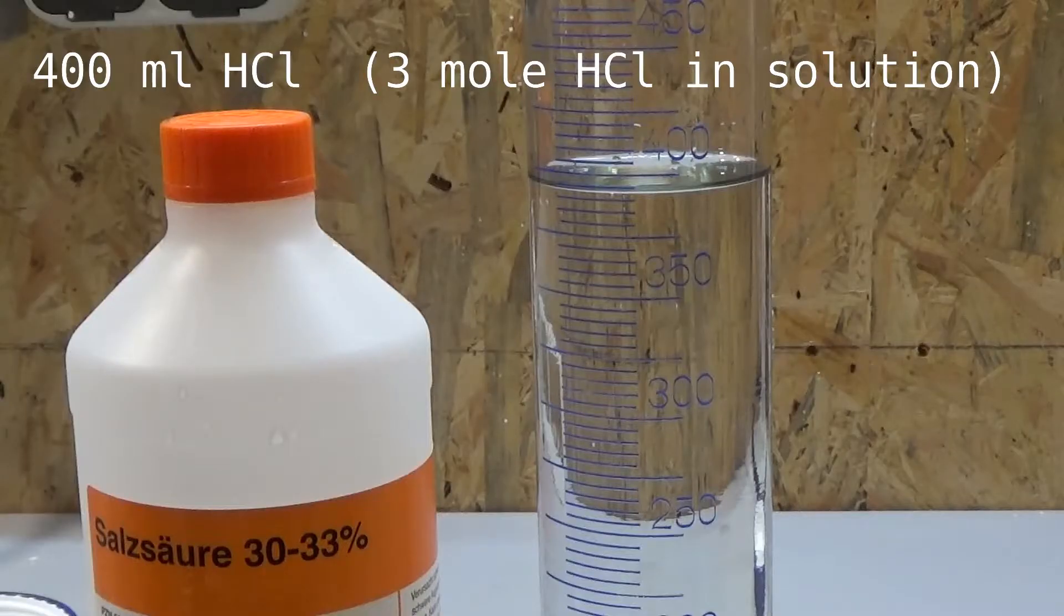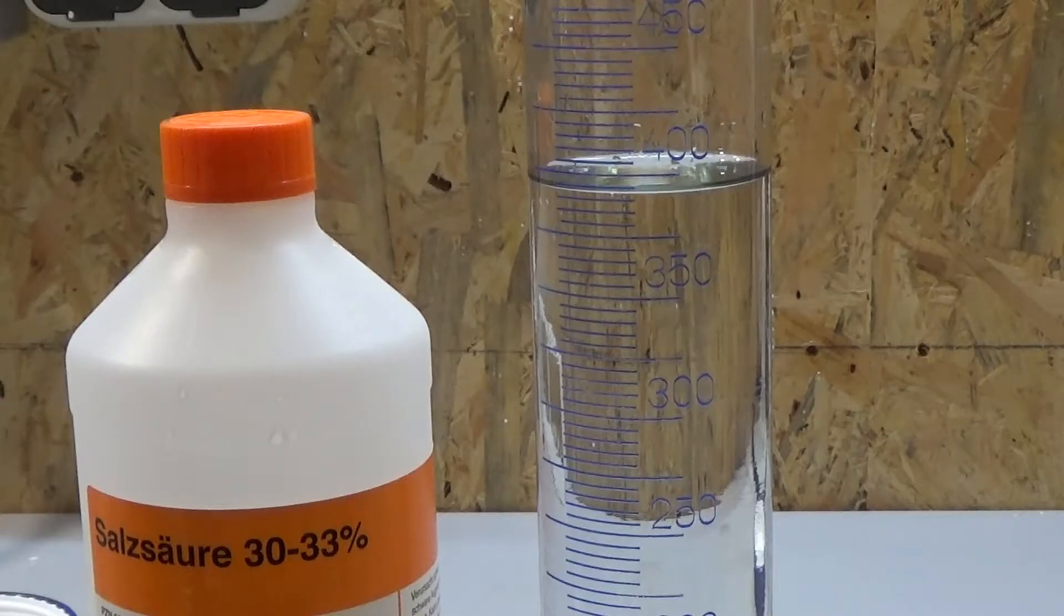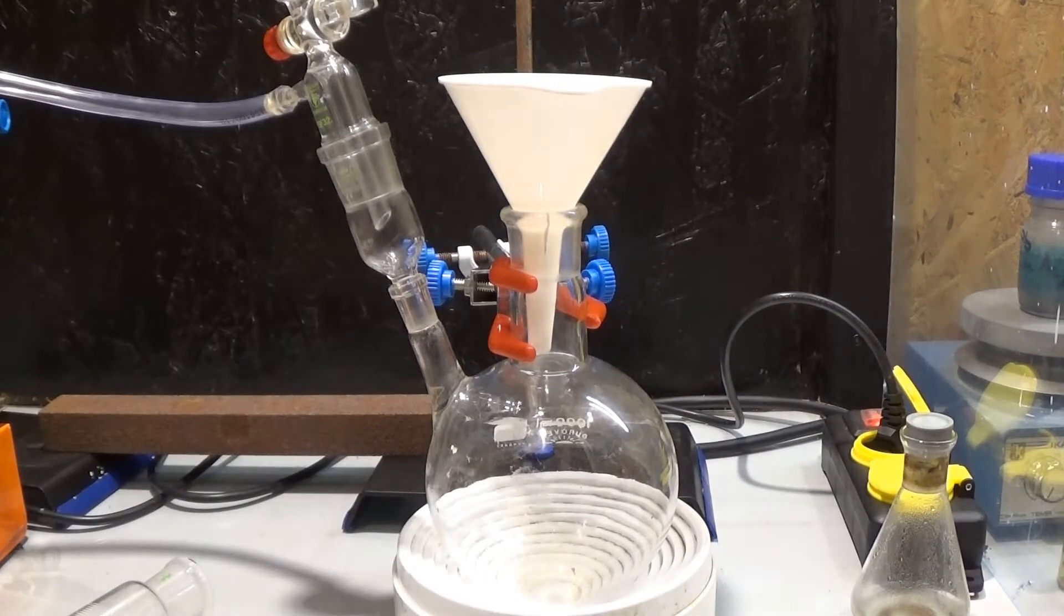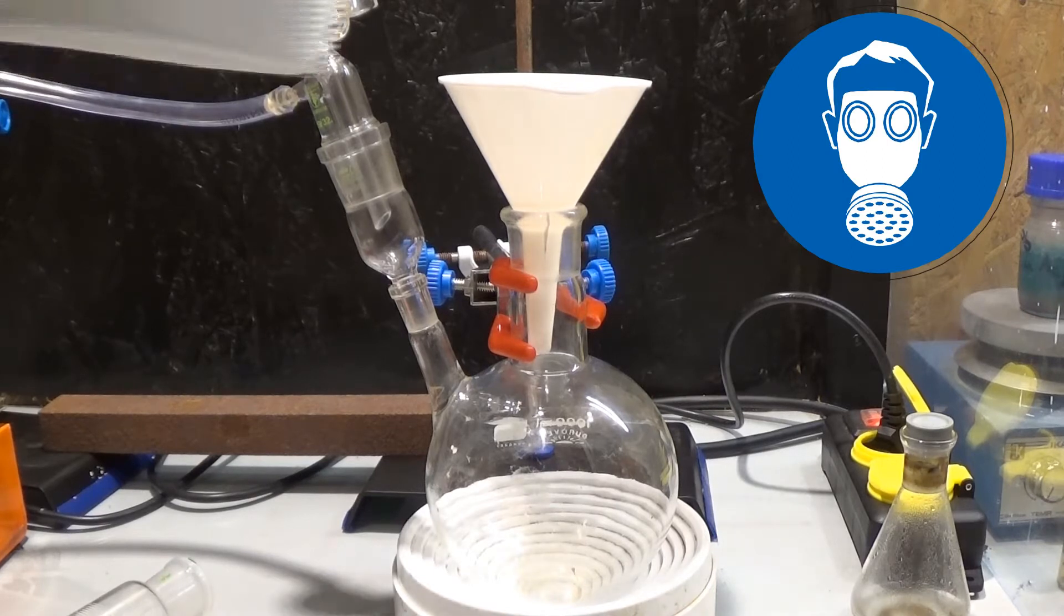After this I measured 400 ml of a 30-33% hydrochloric acid solution out. The TCCA is then transferred into a gas generator setup.